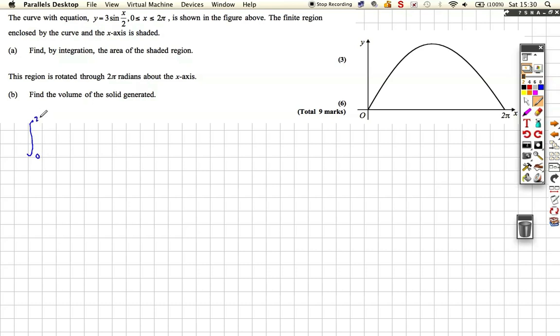So integration between 0 and 2π of 3sin(x/2)dx. I'm going to take the 3 from the function, and using the reverse chain rule I'm going to get 1 over a half, which becomes 2. So with the 3, that becomes a 6.